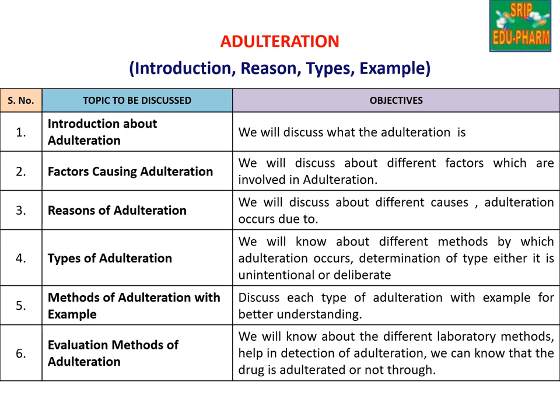Sixth one is evaluation methods of adulteration — evaluation parameters by which we can determine whether adulteration has been performed in a particular drug or not.